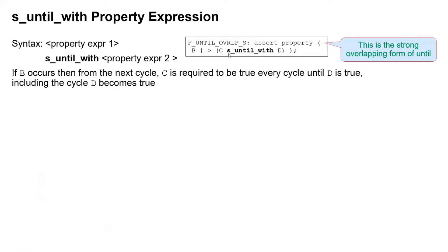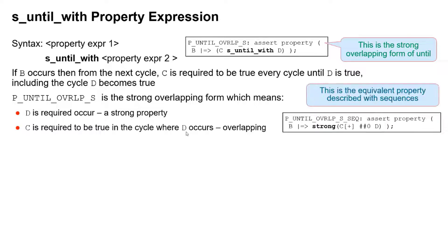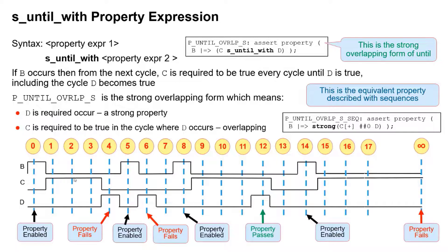S_until_with is the same as the previous until_with example but with S-underscore on the front. B occurs, then from the next cycle C is required to be true every cycle until D is true, including the cycle where D becomes true — that's what until_with means. As it's a strong form, D is required to occur, and because it's overlapping, C is required to be true in the cycle where D occurs. The equivalent sequence wraps the weak form's sequence with the keyword strong. Here B occurs and C stays high but not in the cycle where D occurs — that's a failure because it's an until_with. Here B occurs, D occurs the next cycle but C does not occur with it — failure. Here B occurs, C stays high up to and including the cycle where D occurs — pass. Here B occurs, C stays high to infinity but D never occurs — failure because it's a strong property.